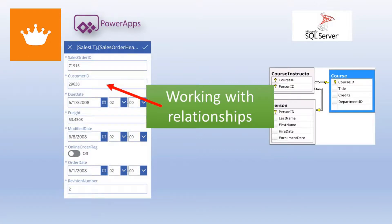Welcome, my name is Paul Kroon and today I'm going to be your host. What I want to talk about today is working with relationships when you're using a SQL database. When you build an app from Power Apps you get just a number, but no user knows the numbers, so we want to change that to a combo box so we can pick from a customer list or an order list. Let's go to Power Apps.